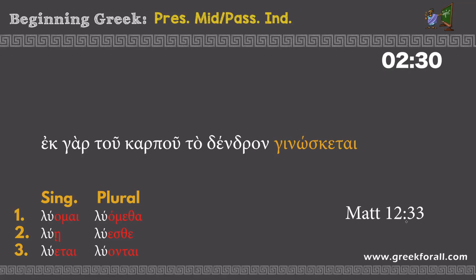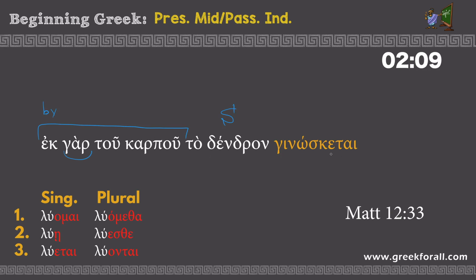A good example from the Gospel of Matthew chapter 12: 'ek gar tou karpou to dendron ginōsketai.' 'For' — then we have a prepositional phrase — 'from the fruit' (in English we would say 'by the fruit'). 'To dendron' is our subject: 'the tree.' 'Ginōsketai' has the ending '-etai,' which is third person singular and agrees with our subject. The middle voice will not work here, but the passive form will: 'For by the fruit the tree is known.'